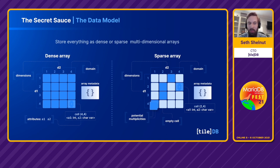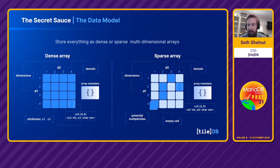Inside every cell, you can have a tuple of values — we call those attributes. Every cell can have different data types: integers, strings, datetimes, with variable length or fixed length attributes. So a wide variety of data can be captured by these models. A sparse array also allows you to have multiplicities or duplicates. So every single structured data type can be captured under the array model.